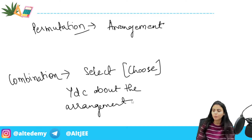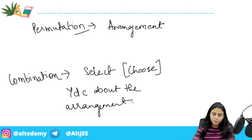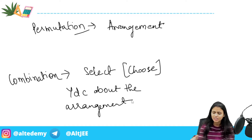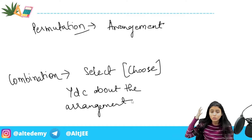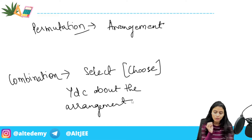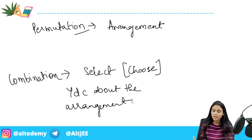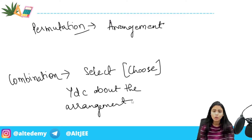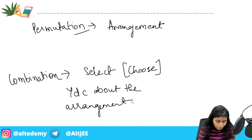So combination is straightforwardly applied when you see that you have to choose among these items or people. When you know that you have to arrange people in a line with certain conditions, you apply permutation. Whenever arrangement comes into the question, apply permutation; whenever you only need to choose, apply combination. That's one key question answered: you now know when to use combination and when to use permutation.